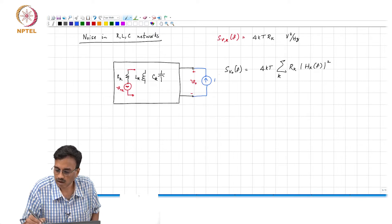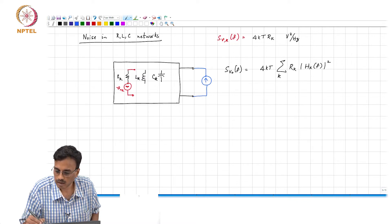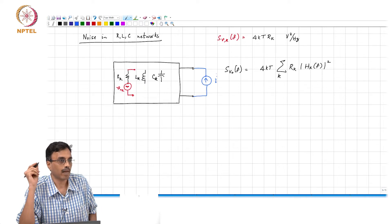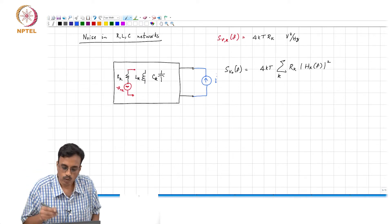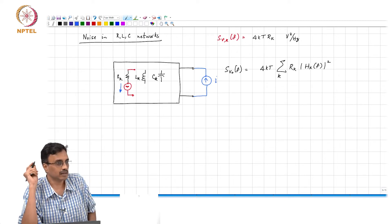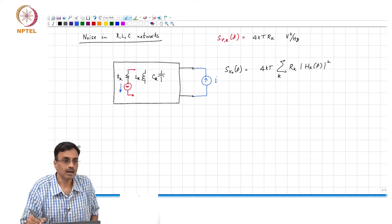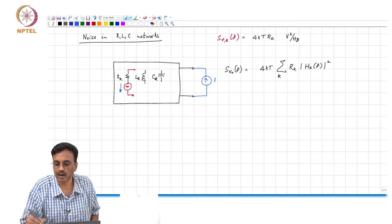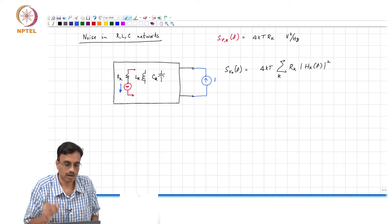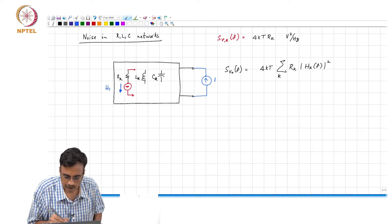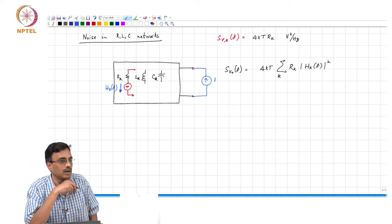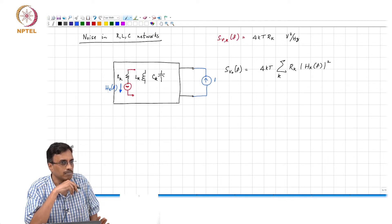Let us say there is a current I flowing in. What comment can you make about the transfer function from here to the current in the kth resistor? If this is a phasor of magnitude 1 at angle 0, the phasor of the current in the kth resistor is simply h_k(f) times 1.